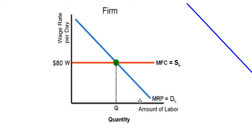If we think back on the problem, that last worker is going to be able to produce 20 towels a day. Remember, marginal revenue product is marginal physical product — which in this case is 20 — times price. So there's no mystery here that the price of towels should be $4 each.